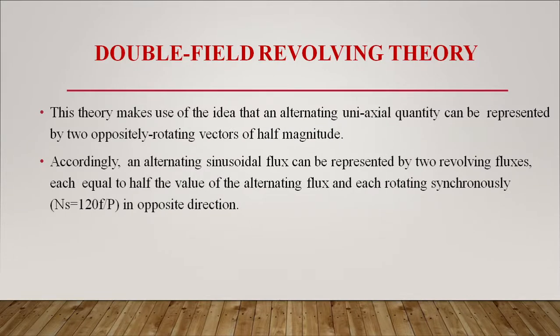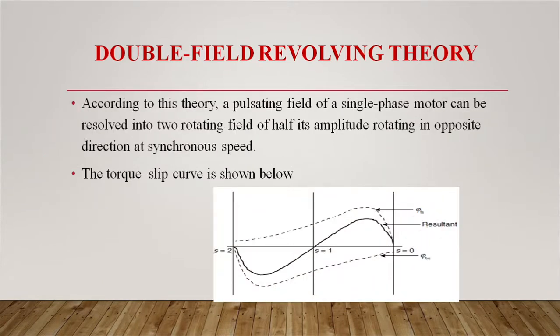The double revolving field theory makes use of the idea that an alternating uniaxial quantity can be represented by two oppositely rotating vectors of half magnitude. Accordingly, an alternating sinusoidal flux can be represented by two revolving fluxes, each equal to half the value of the alternating flux, and each rotating synchronously in opposite directions at synchronous speed Ns = 120F/P. According to this theory, a pulsating field of a single phase motor can be resolved into two rotating fields of half its amplitude rotating in opposite directions at synchronous speed.